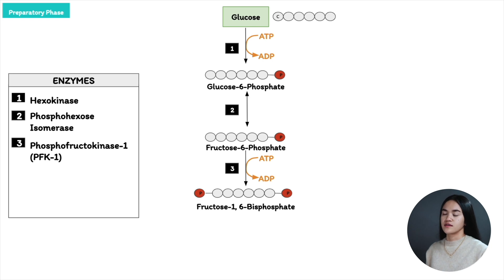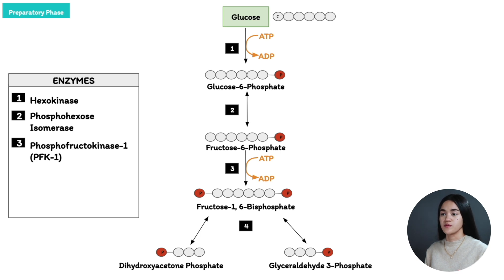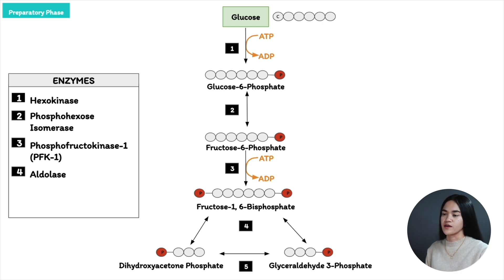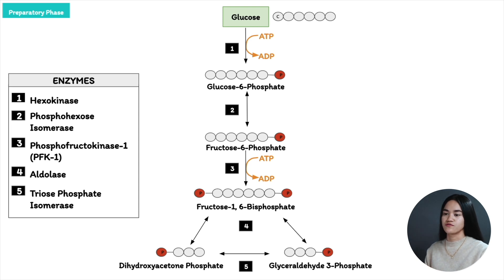From fructose-1,6-bisphosphate, the next step splits it to form two 3-carbon sugars: dihydroxyacetone phosphate (DHAP) and glyceraldehyde-3-phosphate. This is catalyzed by the enzyme aldolase. However, glyceraldehyde-3-phosphate is the only one that can continue through glycolysis. So DHAP is converted into glyceraldehyde-3-phosphate, catalyzed by triose phosphate isomerase, and this reaction is reversible. We have now produced 2 glyceraldehyde-3-phosphate — that completes the preparatory phase, steps 1 to 5, in which we invested 2 ATP.